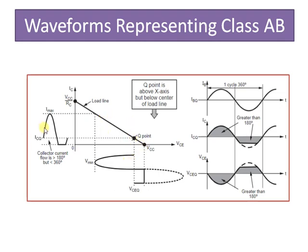The transistor will conduct for a slightly greater interval than 180 degrees but less than 360 degrees, and these waveforms corresponding to IB current, IC current, and VCE are observed here.